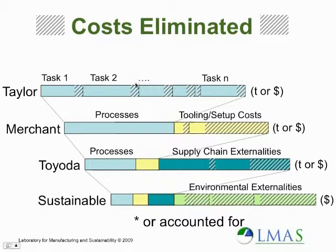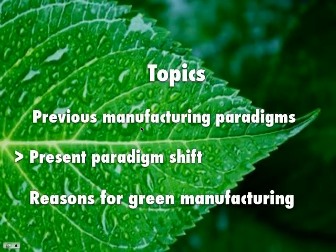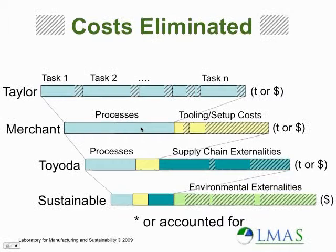When Taylor looked at it, the organizational and control issues were number one in his mind. Merchant essentially identified a bunch of externalities that didn't add value, took those out of the cycle so you could increase the production rate, reduce the production time, and essentially focus on value-added activity.